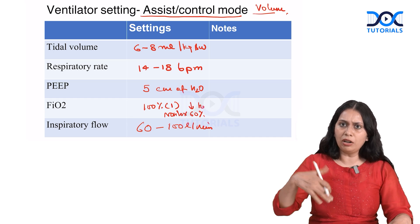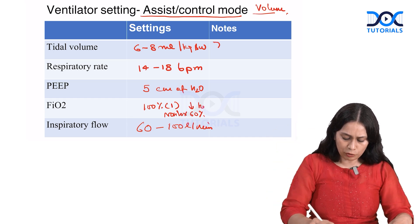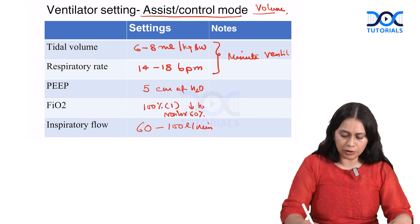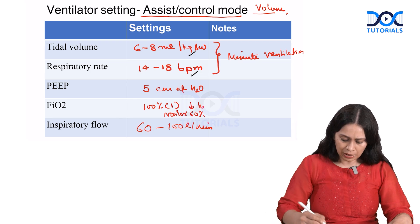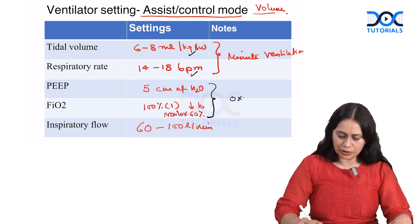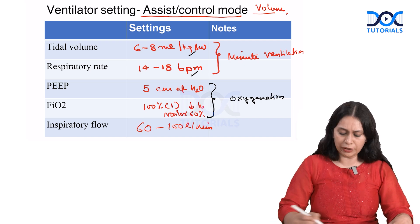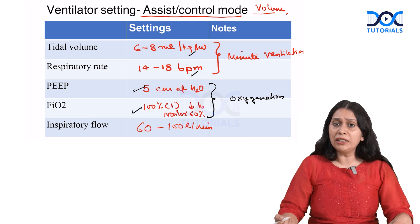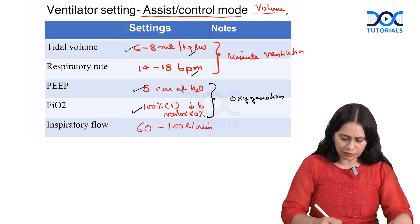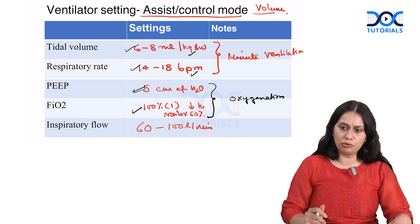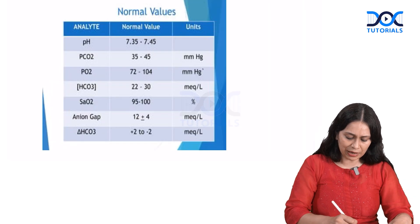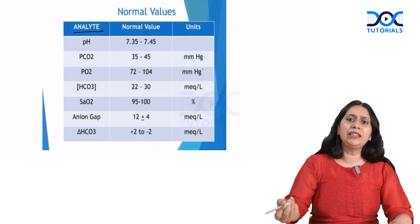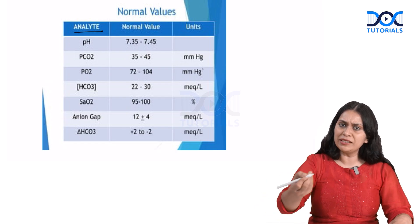We put a patient on a ventilator to maintain oxygenation and ventilation. Tidal volume and respiratory rate are responsible for delivering minute ventilation. If the patient's ventilation is getting affected, we need to increase tidal volume and respiratory rate. PEEP and FiO2 are responsible for maintaining oxygenation. If oxygenation is getting affected, we need to increase PEEP and FiO2. After 20 minutes of ventilator settings, we get an ABG (arterial blood gas) done to analyze adequacy of ventilation and oxygenation.